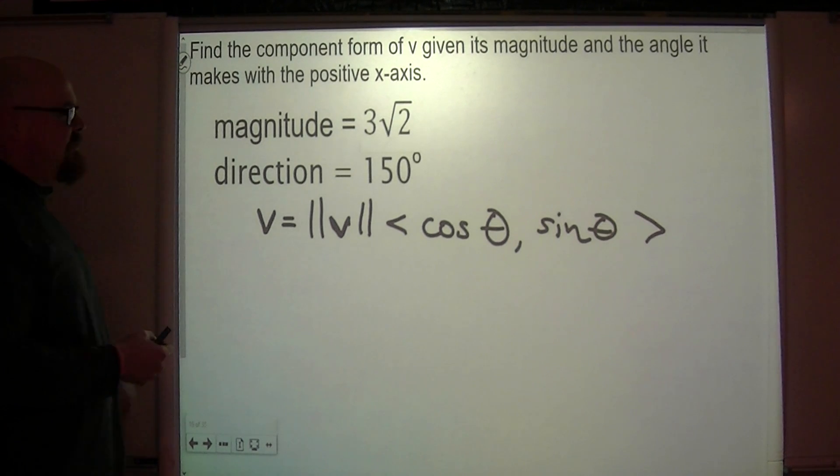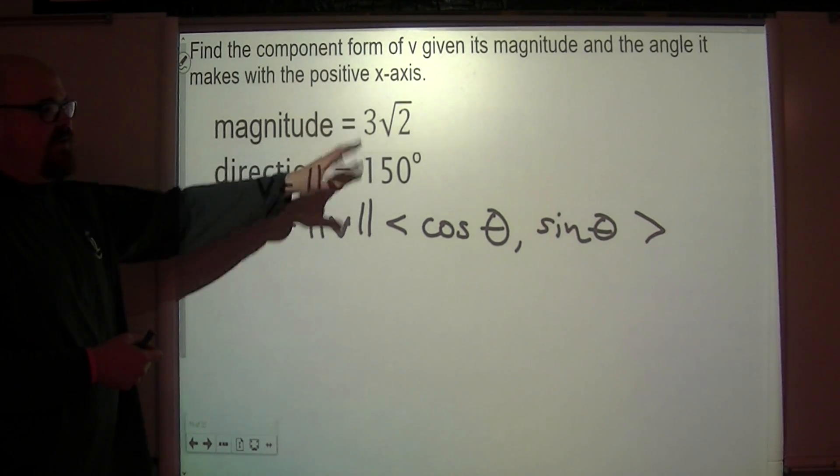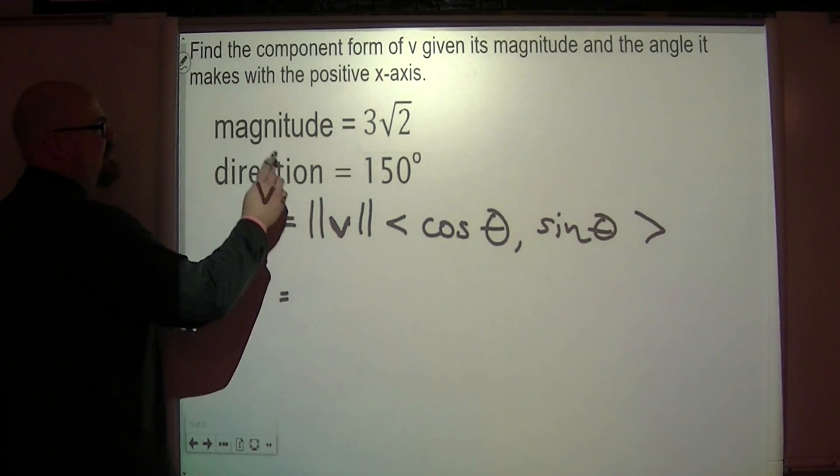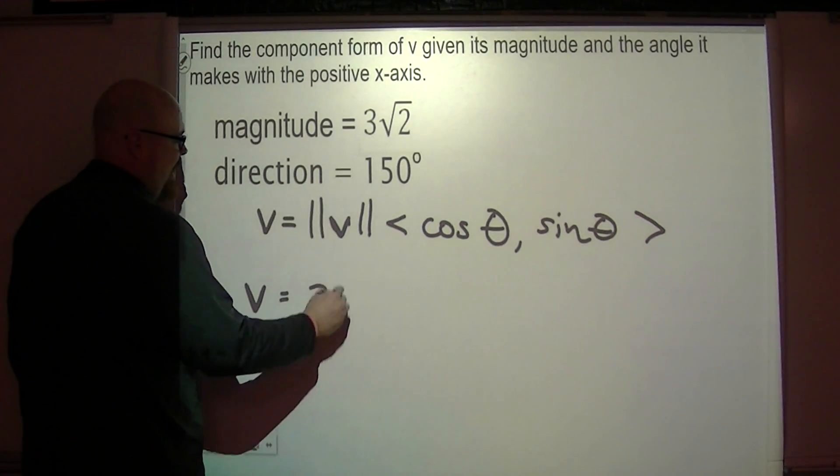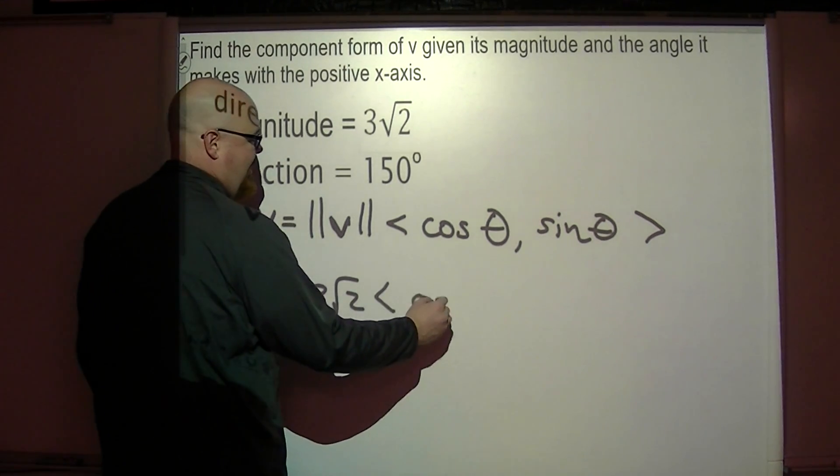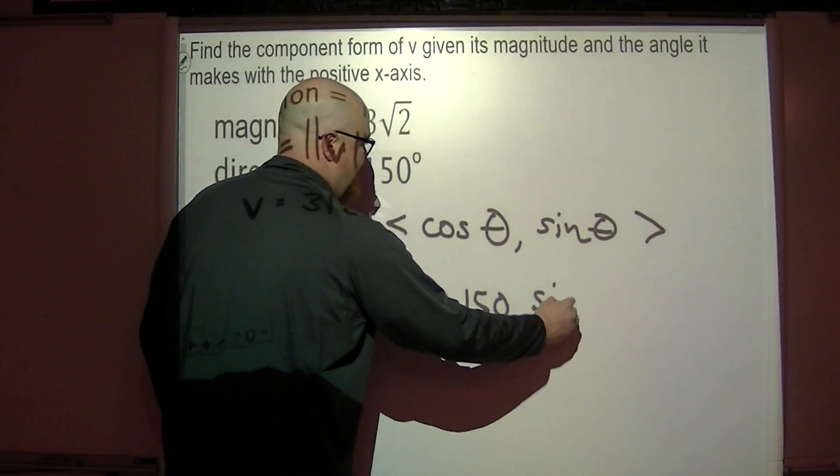If we have this format with this information, you're really just plugging this stuff into this formula. So, the magnitude of this vector is three radical two, and then the cosine of this angle is just the cosine of 150.